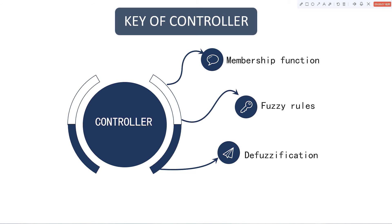In this paper, the input membership function uses the triangle function and the output membership function uses a Gaussian function. The triangle and Gaussian membership functions have good adaptability, convenient operation, and familiar performance. The fuzzy rules are derived from expert experience, and the defuzzification method is chosen because the calculation is small and the calculation speed is accurate.